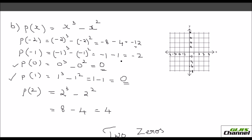If you plot it: for minus 1 you have negative 2, for 0 it is 0, and for 1 it is also 0, and for 2 it is 4. So you find 2 zeros — one over here at 0 and the other one over here at 1. So this is for 2 zeros.